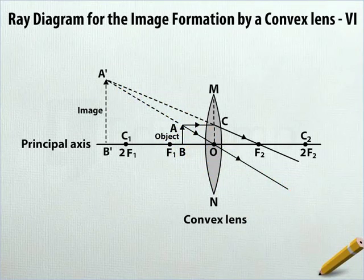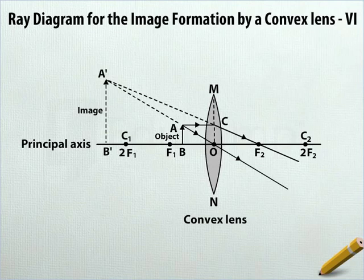Here is the ray diagram for the image formation by a convex lens when the object is between the focus and the lens.